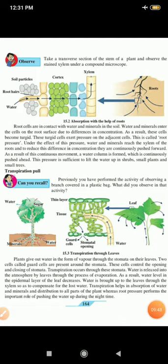Plants give out water in the form of vapour through the stomata on their leaves. In the picture, you can see the stomatal opening. When the school begins, we can do this practical. I will show you the stomata also. We will take the section and I will show you the stomatal openings. These cells control the opening and closing of the stomata - they are like the doors or the windows closing and opening. Transpiration occurs through this stomata. Water is released into the atmosphere by leaves through the process of evaporation. As a result, water level in the epidermal layer of the leaves decreases. Epidermal is the top layer of the cells. Water is brought up to the leaves through the xylem so as to compensate for the water loss.